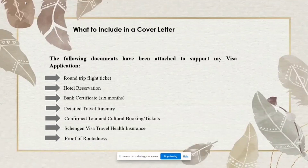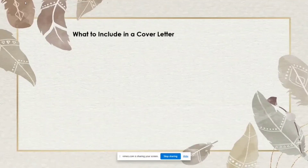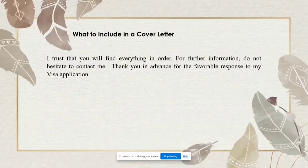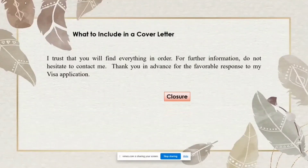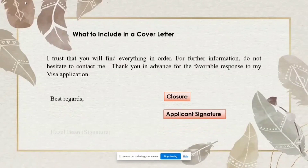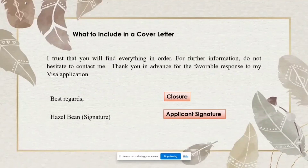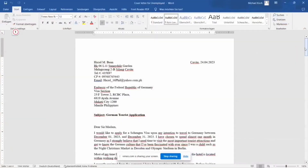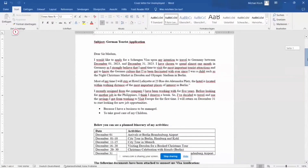At the last paragraph, you can write: 'I trust that you will find everything in order. For further information, do not hesitate to contact me. Thank you in advance for the favorable response to my visa application.' Before your letter ends, don't forget to write the closure — 'Best regards' — and most importantly, your signature as an applicant.